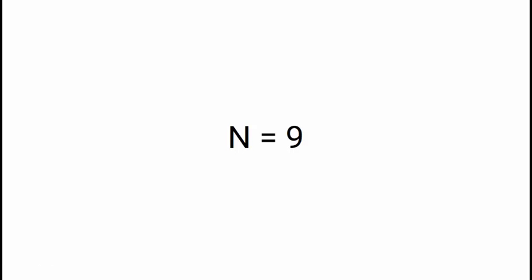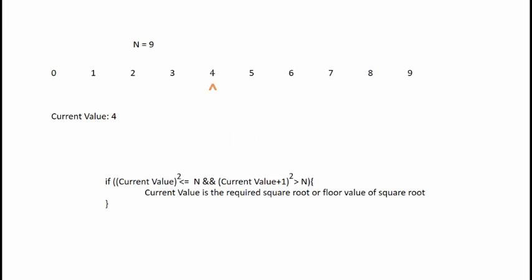For example, take n equals 9. We consider the range from 0 to 9 and find the middle element, which is 4 (since 4.5 cast to integer is 4). For 4, 4 squared is 16, which is greater than 9, so the condition is not matched. We take the range 0 to 4 and find the middle element, which is 2. Since 2 squared equals 4, which is less than 9, the required square root lies between 2 and 4. The middle element is 3, and 3 squared equals 9, so the required square root is 3.